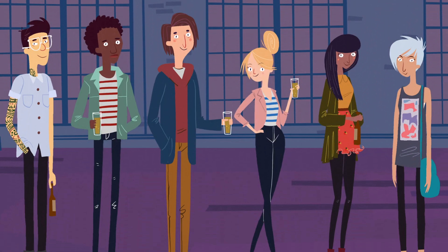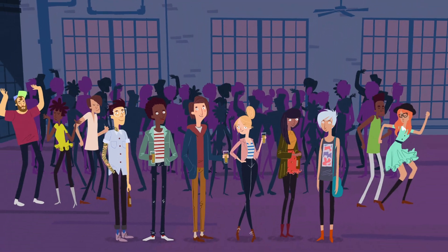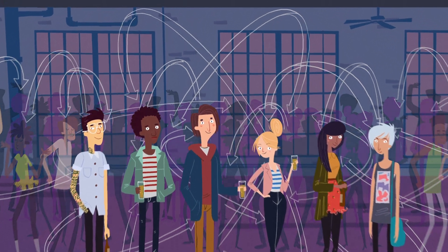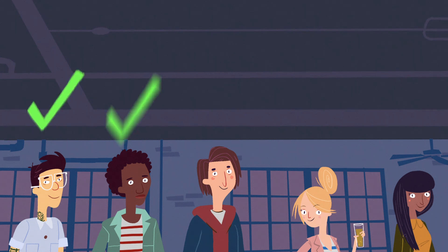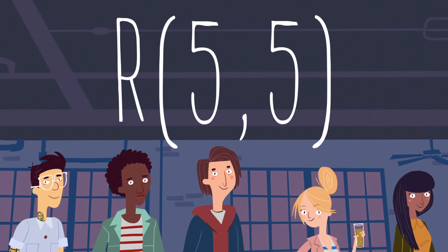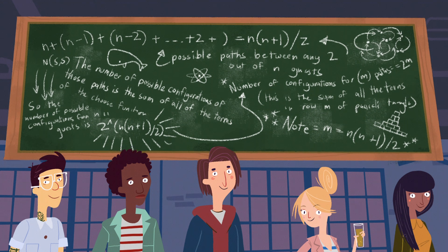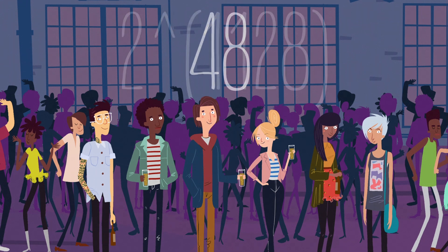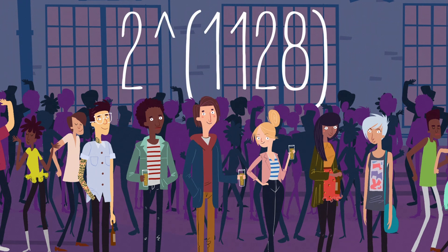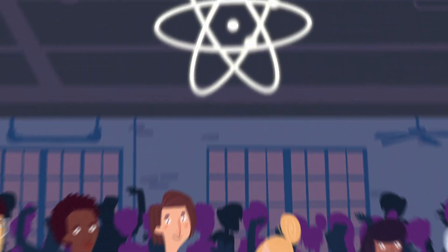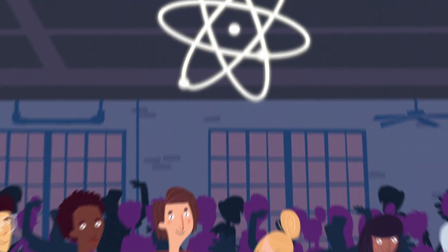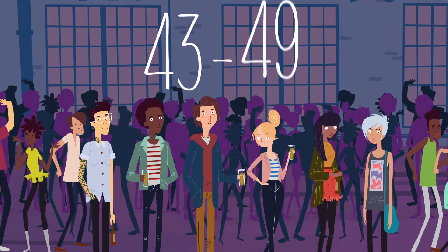Ramsey theory gives us a guarantee that such a minimum number exists for certain patterns, but no easy way to find it. As the total number of guests grows higher, the combinations get out of control. For instance, say you're trying to find out the minimum size of a party where there's a group of five people who all know each other or all don't. Despite five being a small number, the answer is virtually impossible to discover through an exhaustive search. A party with 48 guests has 2 to the 1,128th power possible configurations, more than the number of atoms in the universe. Even with the help of computers, the best we know is that the answer is somewhere between 43 and 49 guests.